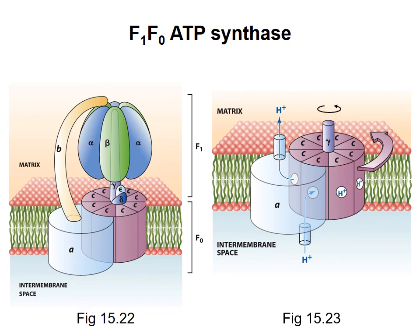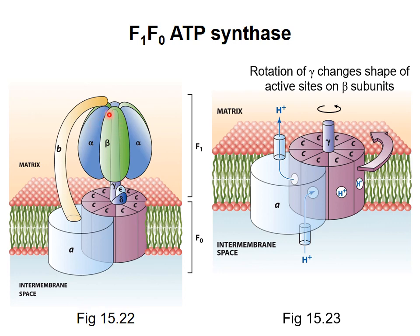As the C subunits rotate, they drive rotation of the long gamma subunit. The gamma subunit makes contacts with the three beta subunits. As gamma rotates, it bumps or pushes against the three beta subunits in turn, causing conformational changes that affect the active site and drive the phosphorylation of ADP to make ATP. The peripheral stalk acts to hold the alpha-3 beta-3 subcomplex still, preventing alpha and beta from rotating along with gamma.